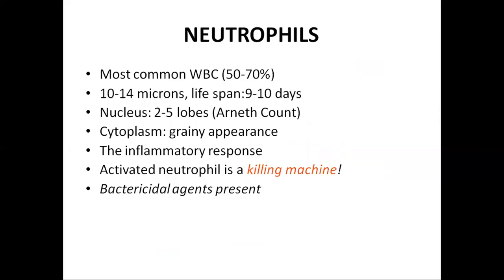Now the properties of WBCs separately. Neutrophils: their count is 50 to 70 percent, their size is 10 to 14 micrometers, and the lifespan is 9 to 10 days. The nucleus consists of two to five lobes — it is a multi-lobed nucleus. The age of the cell is determined by the number of lobes: more lobes means greater age. Their cytoplasm has a granular appearance, which is why they are classified as granulocytes.